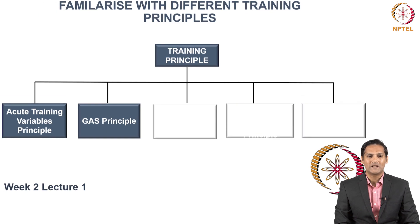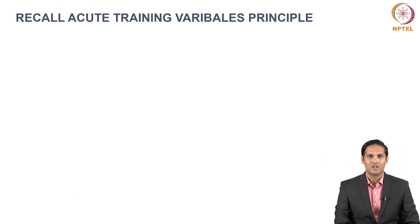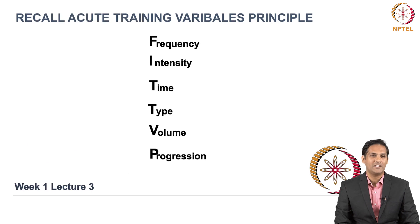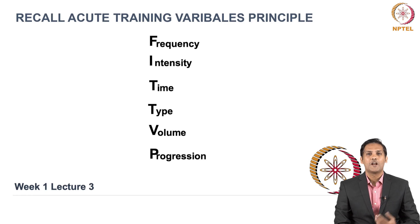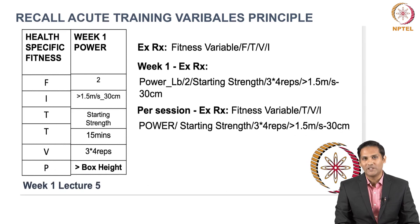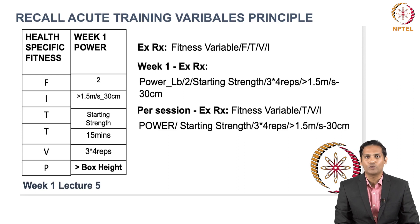Let's begin with the Acute Training Variable Principle and GAS Principle in this lecture. Recall the Acute Training Fitness Variables covered in Lecture 3: Frequency, Intensity, Type, Time, Volume, and Progression. The end application of these principles includes describing your weekly workout routines as well as writing an exercise prescription on a weekly basis or on a workout bout basis.